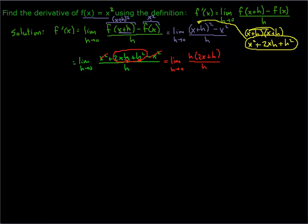There is a common factor — this is exactly what we want or hope for — that there's a factor of h in the numerator that will cancel out the h in the denominator. Because otherwise we could just evaluate h equals 0 in our expression, but the h in the denominator is what gives us a problem. So it's really nice that the factors of h cancel, and now we have the limit as h goes to 0 of 2x plus h. We can let h go to 0, and we're left with 2x.